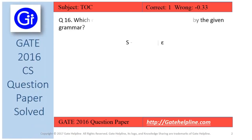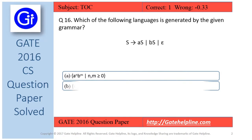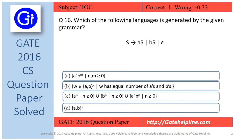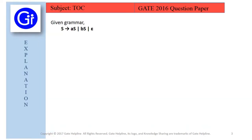Question number 16 is: which of the following languages is generated by the given grammar? The grammar is S → aS | bS | ε. In this question we are given with this grammar, and we can get three productions from here: S → aS, S → bS, and S → ε.